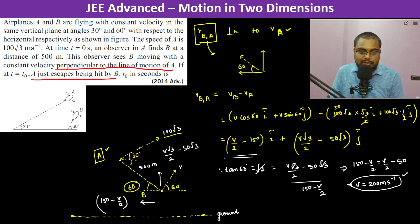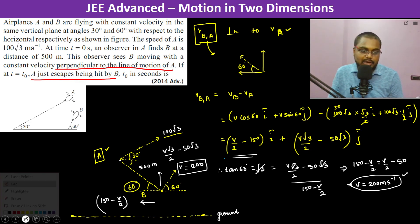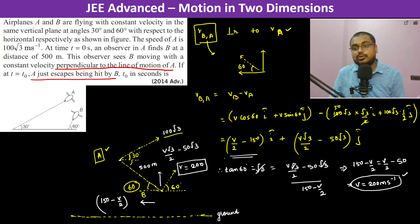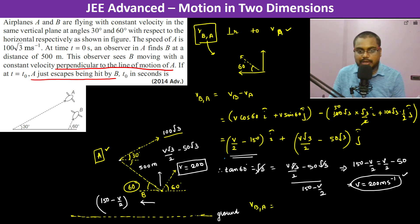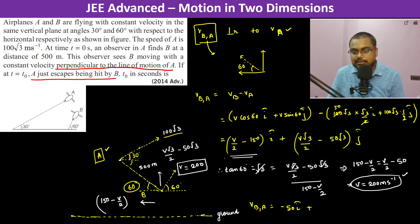So therefore, the velocity of B is 200 meter per second. And velocity of B with respect to A is — so this is minus 50 i-cap plus — so 100 root 3 minus 50 root 3 j-cap.